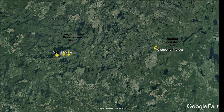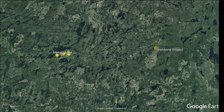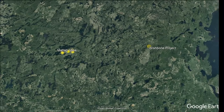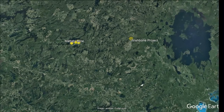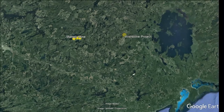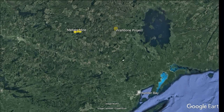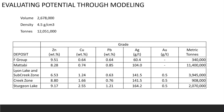Just to refresh you on where that is — it's in the Obonga Lake Greenstone Belt, about 80 kilometres due east of the Sturgeon Lake Greenstone Belt, which was host to those five VMS deposits. Both are located about 250 kilometres north of Thunder Bay, Ontario, which is where I live.